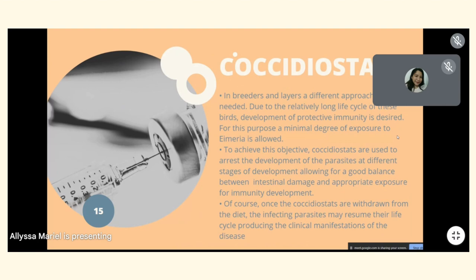Coccidiostats require a different approach in breeders and layers. Due to the relatively long life cycle of these birds, development of protective immunity is desired. A minimal degree of exposure to Eimeria is allowed. Coccidiostats arrest the development of parasites at different stages, allowing a good balance between intestinal damage and appropriate exposure for immunity development. Once coccidiostats are withdrawn from the diet, the infecting parasite may resume its life cycle, producing clinical manifestations of the disease.